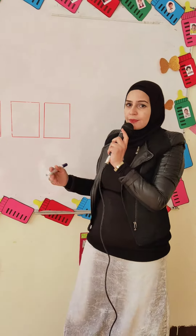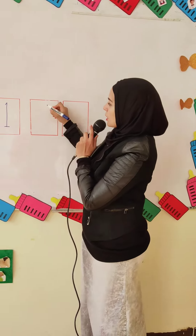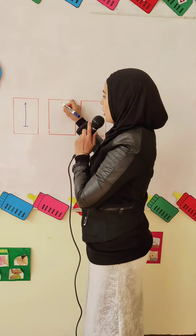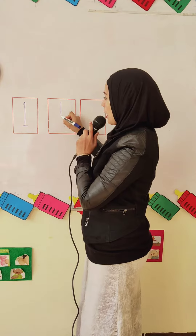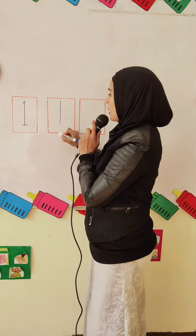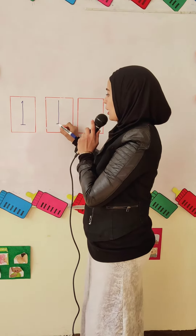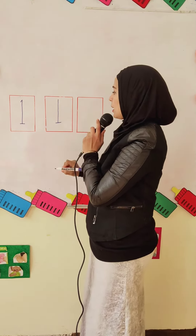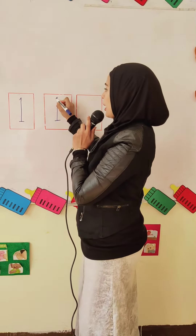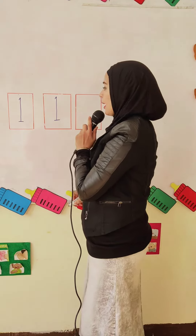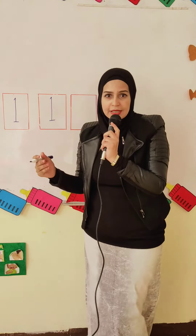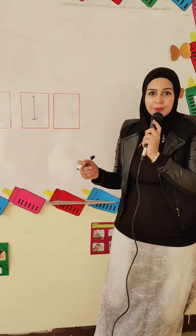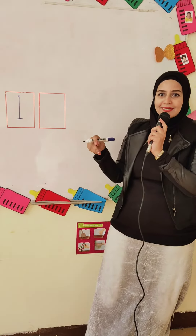Easy, easy. Straight line down, then make a straight line, back to the top to make a diagonal line down. Easy. Again.